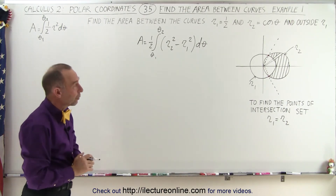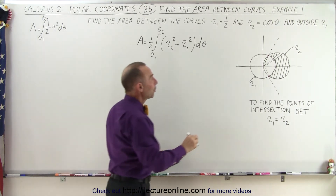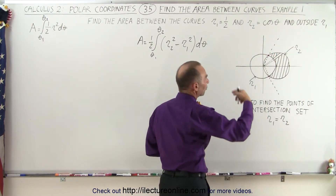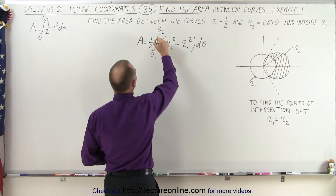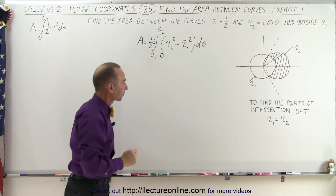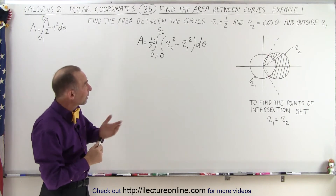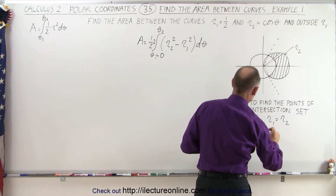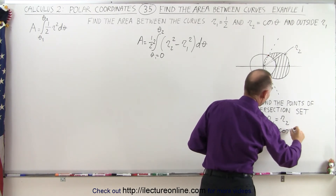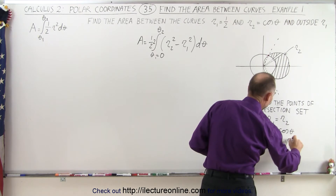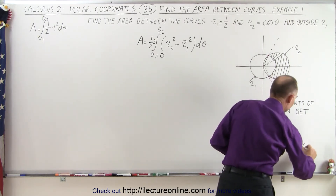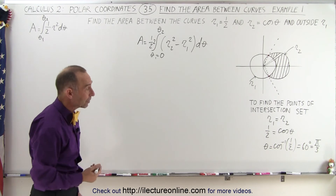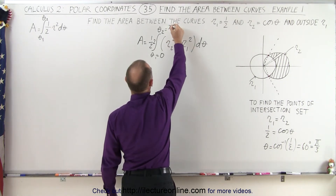Since there is perfect symmetry between the top half and the bottom half, we can integrate from θ equals 0 to whatever angle is defined by the intersection point, then double that area. So we multiply by 2, set the lower limit to 0, and find θ2 by setting r1 equal to r2. That gives us 1/2 equals cosine of θ, so θ equals the inverse cosine of 1/2, which is 60 degrees, or pi over 3. So the upper limit of integration is pi over 3.